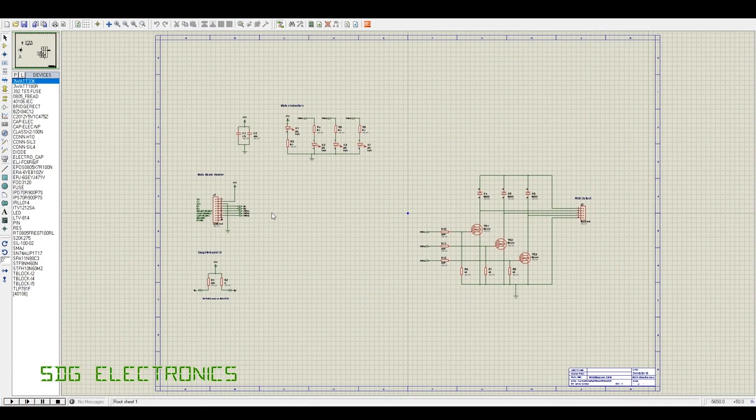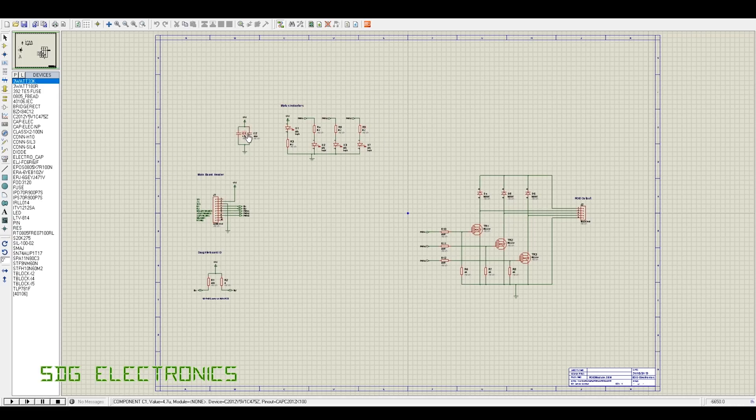Here we have the schematic for this PCB. The components on the left are common to all these modules - some status LEDs, supply bypassing, the connector that goes to the main board, and resistors which tell the main board which module is plugged in.